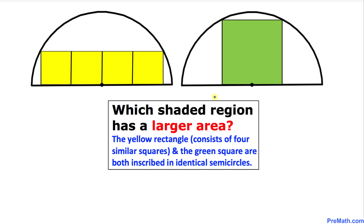Welcome to Pre-Math. In this video tutorial we are going to calculate the area of these given figures one at a time. One of these figures is a yellow rectangle that consists of four identical squares, whereas the other figure is a green square, and both of these regions are inscribed in identical semicircles.